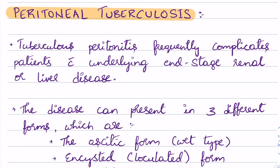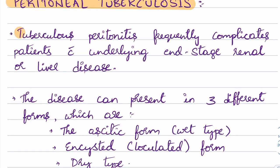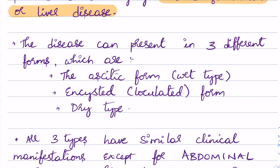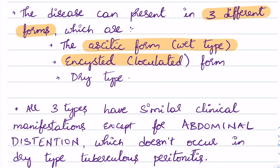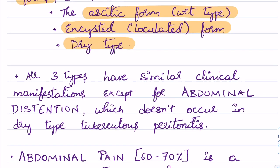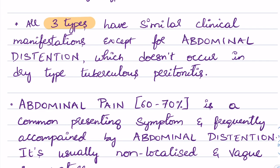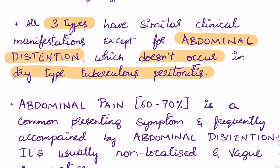Peritoneal tuberculosis, also known as TB peritonitis, frequently complicates patients with underlying end-stage renal disease or end-stage liver disease. TB peritonitis usually presents as three different forms: the first is the ascitic form or wet type, the second is the encysted or loculated form, and the third is the dry type. All three types have similar clinical manifestations except the dry type, which does not have abdominal distension.